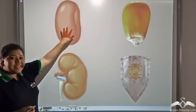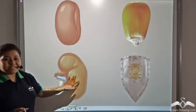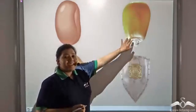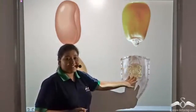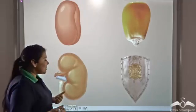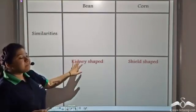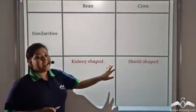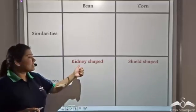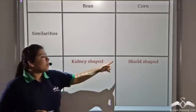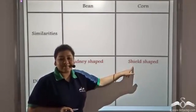While bean is kidney shaped, corn is shield shaped. So this is the first difference between bean and corn: bean is kidney shaped and corn is shield shaped.